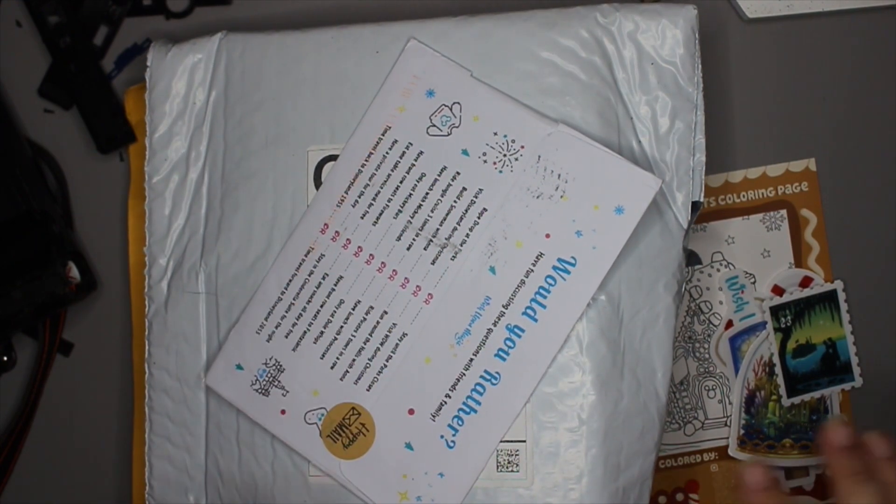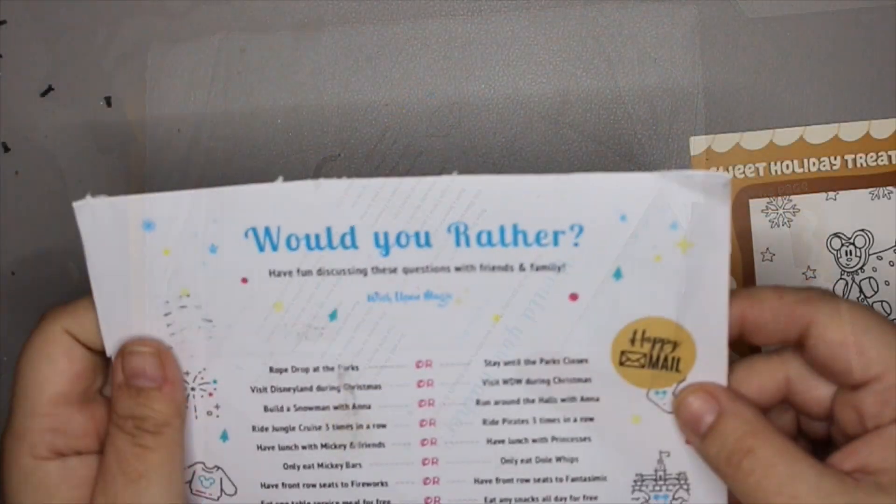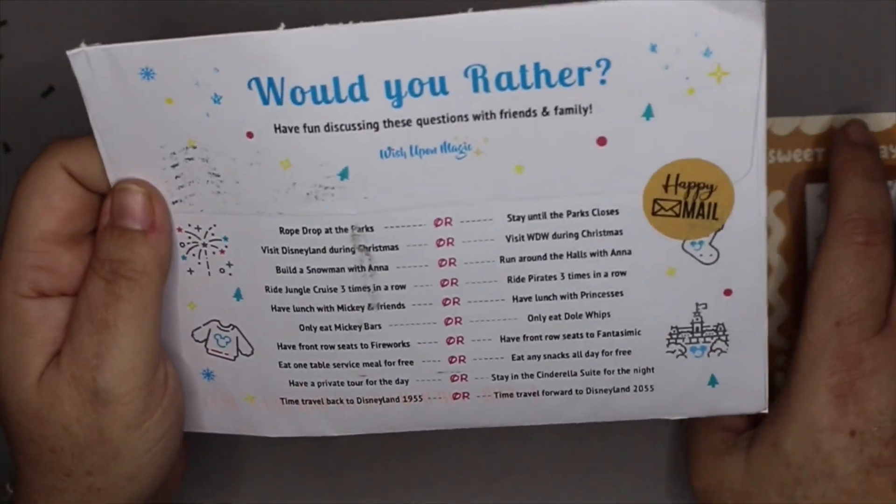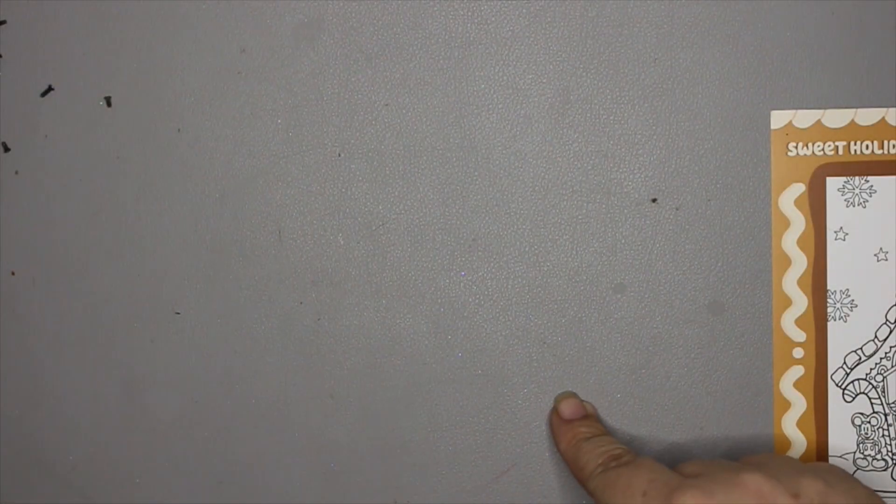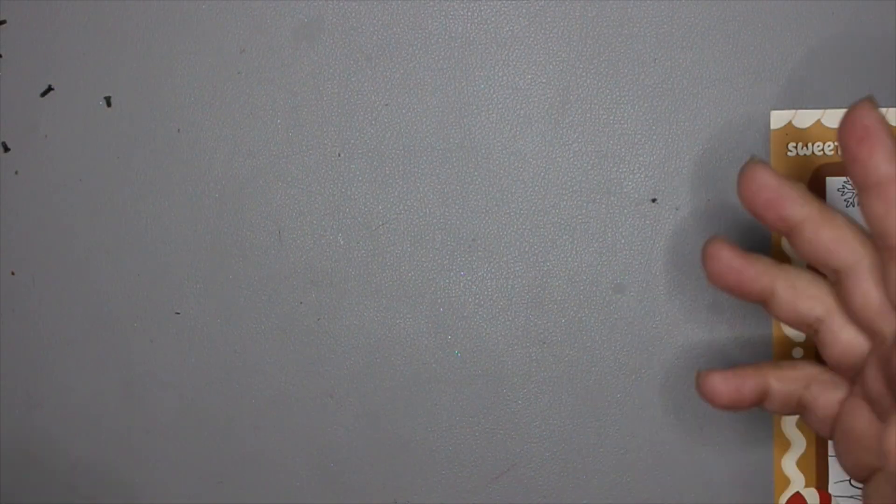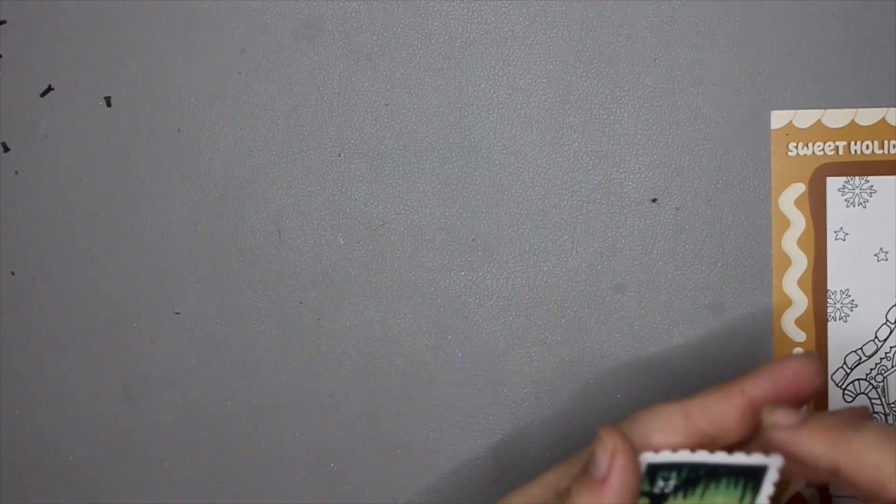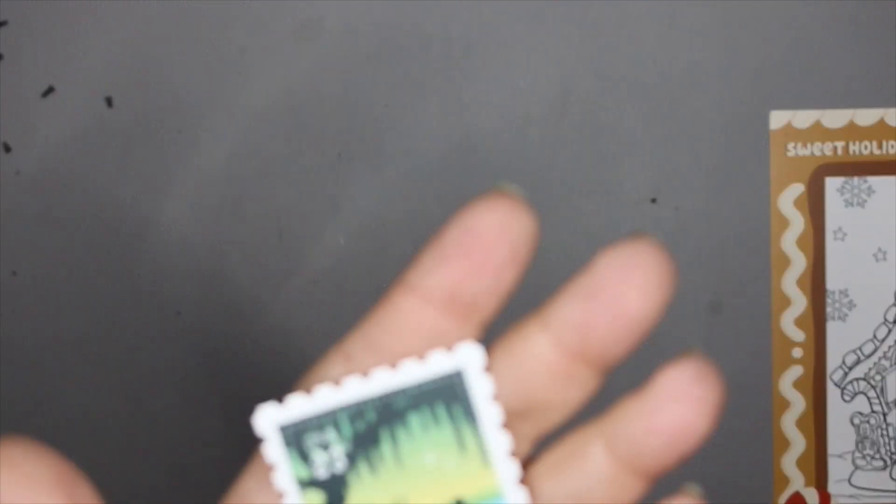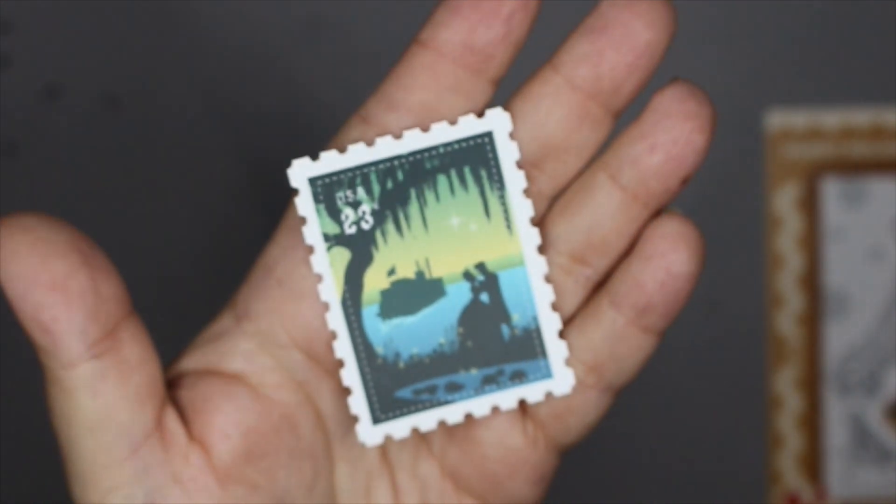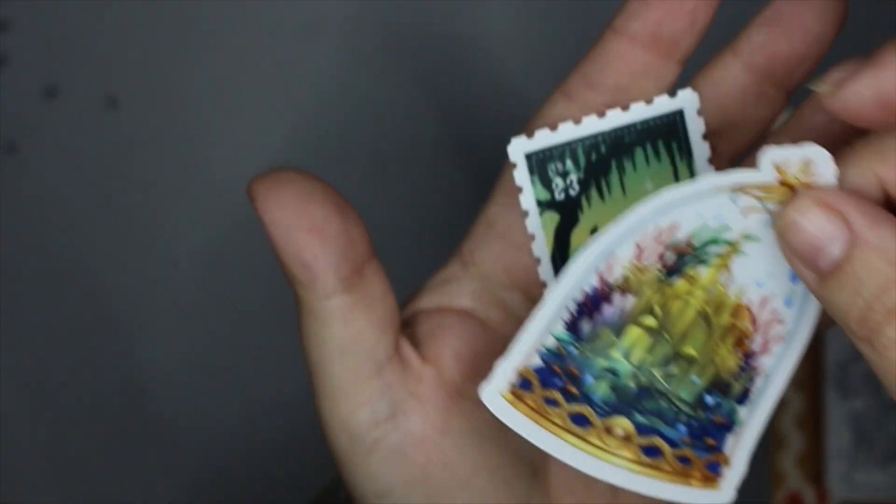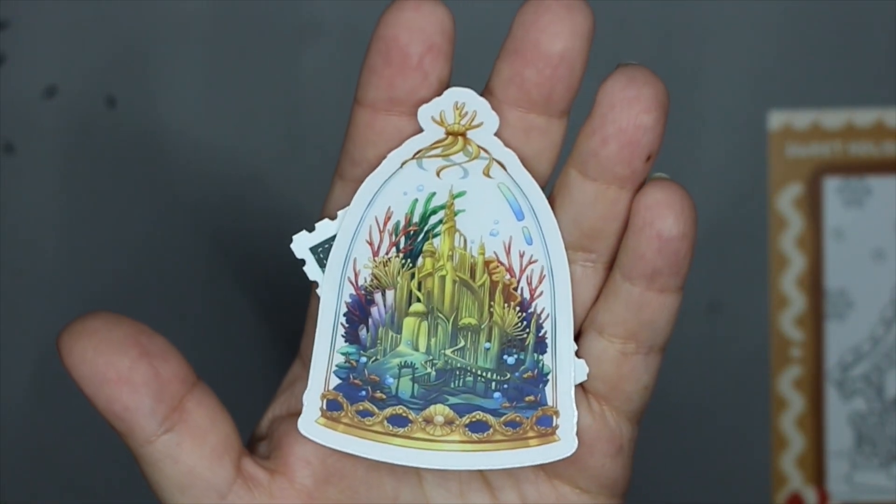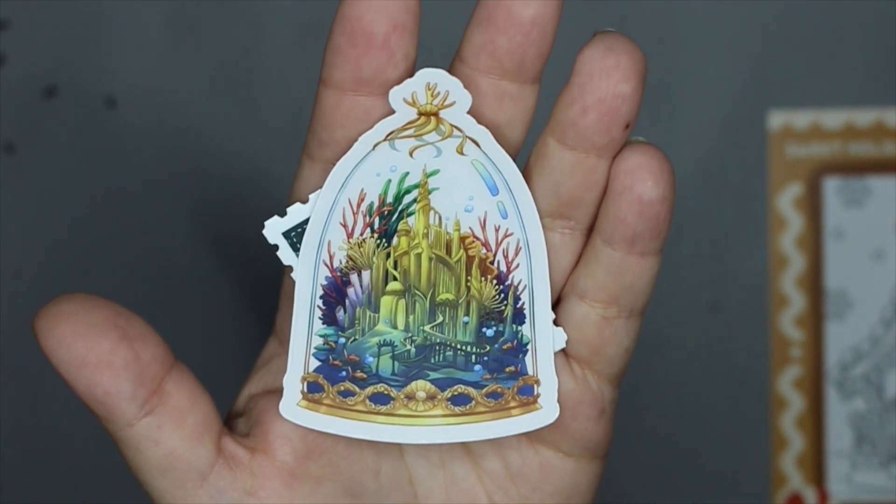Okay, so this first bit is from Etsy, a shop called Wish Upon Magic. Yeah, it's pretty self-explanatory, but look at how cute these are. That is Tiana, that is an underwater castle. These are clear with a white backing right now, but they are clear.